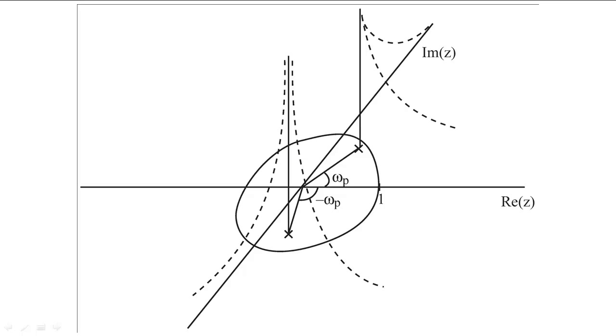To start, let's suppose that we have a causal filter which has two poles inside the unit circle. These poles are complex conjugates of each other, so the region of convergence is outside the radius of these poles.